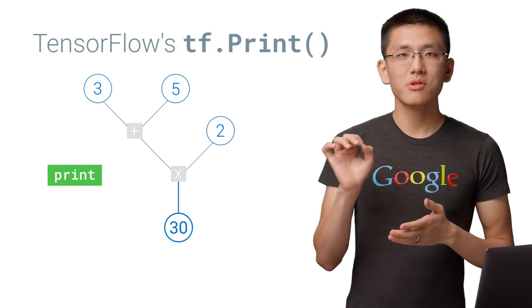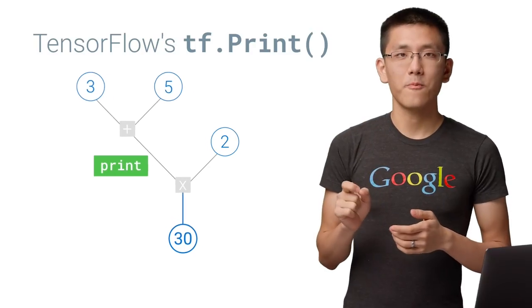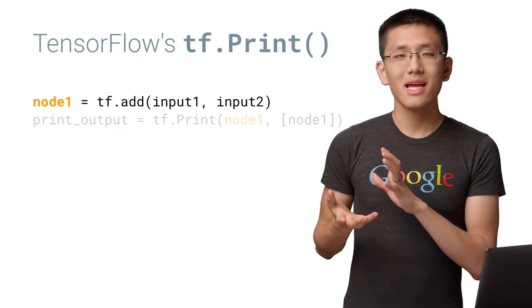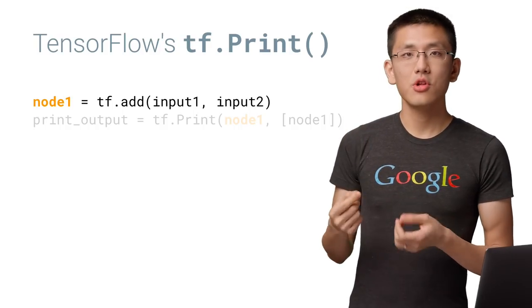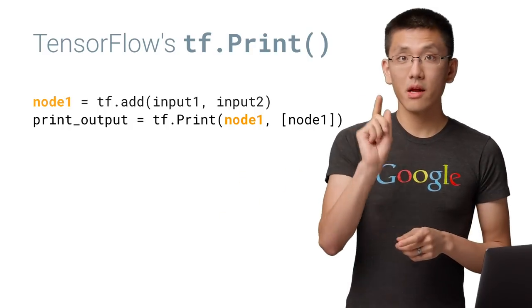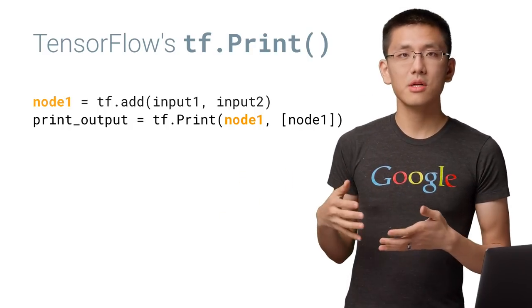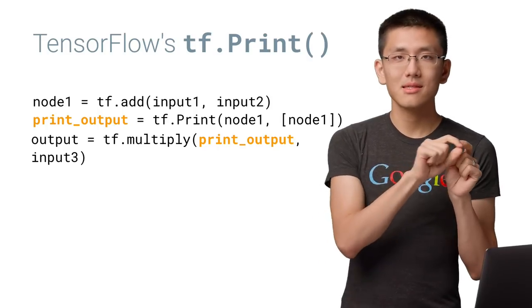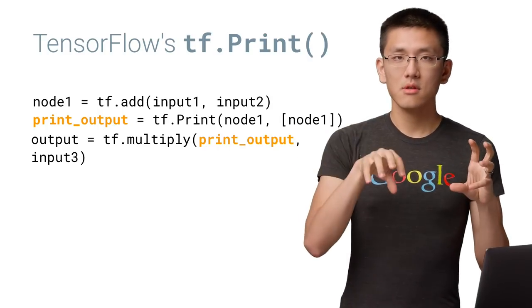We need to splice the print call into the graph like so. The way this manifests in code is to have the print call take, as its first parameter, the node that is its input, and then assign the output to a variable that will serve as an input in a later node in the graph, thus linking the print statement serially into the flow of operations.